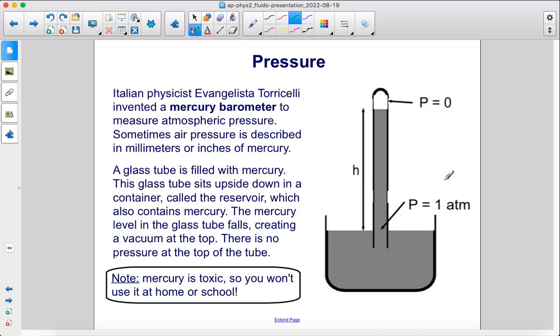Italian physicist Evangelista Torricelli invented a mercury barometer to measure atmospheric pressure. Sometimes air pressure is described in millimeters or inches of mercury. A glass tube is filled with mercury. This glass tube sits upside down in a container called the reservoir, which also contains mercury. The mercury level in the glass tube falls, creating a vacuum at the top. There is no pressure at the top of the tube. Mercury is toxic, so you won't use it at home or school.